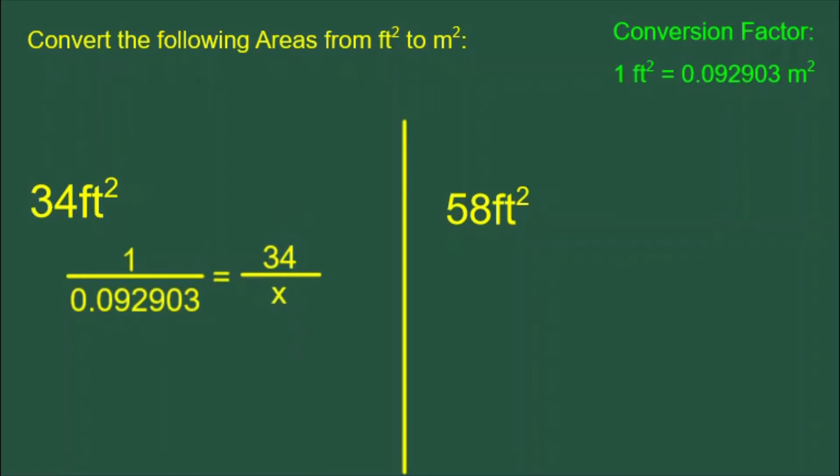And we solve by cross-multiplying. Top times bottom equals bottom times top. 1x is equal to 0.092903 times 34. But of course, 1x is equal to x.